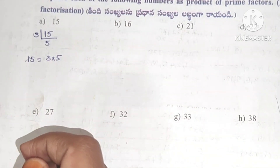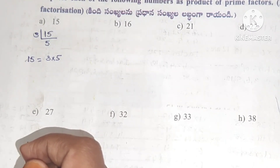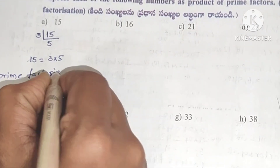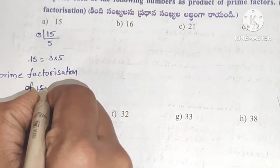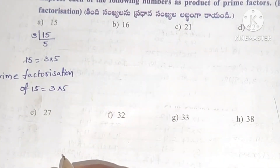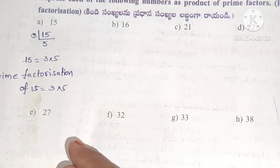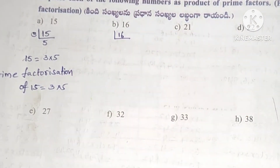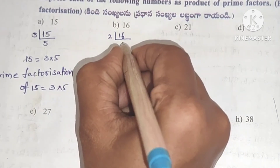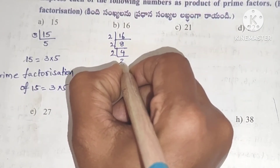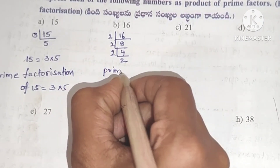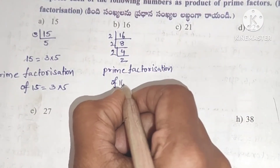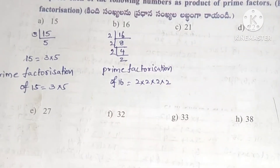Prime factorization of 15 equals 3 into 5. Next, 16. For 16, the first prime number is 2 and 2 divides 16: 2 fours are 8, then 2 twos are 4, then 2 twos again. So prime factorization of 16 equals 2 into 2 into 2 into 2.